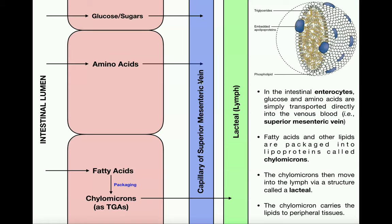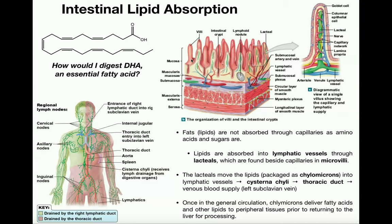We have to package fatty acids as a large lipoprotein called a chylomicron, which then moves into the circulation — but not into the venous system. Notice that chylomicrons do not move into the superior mesenteric vein. Instead, they move into the lymphatic system, specifically absorbed by lymphatic structures called lacteals. Here we have the brush border and the villi with microvilli. Zooming in on one villus, we see capillaries of the superior mesenteric vein — the venule where amino acids and glucose are absorbed — but the chylomicrons move into the lacteals, shown in green.